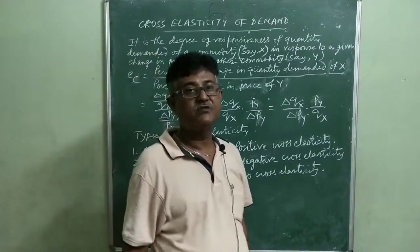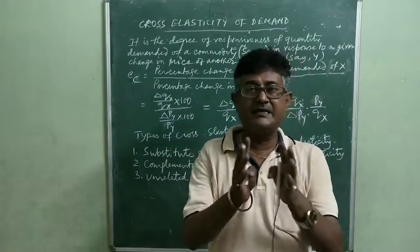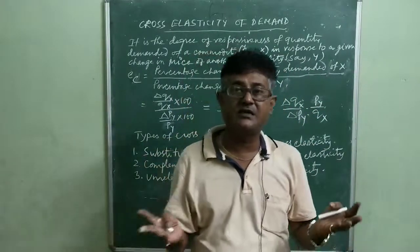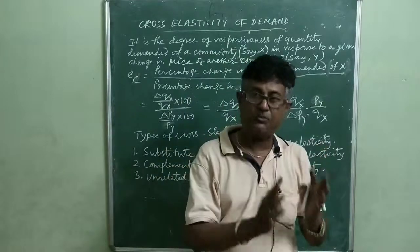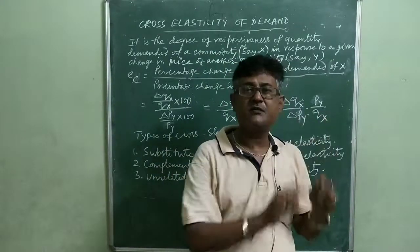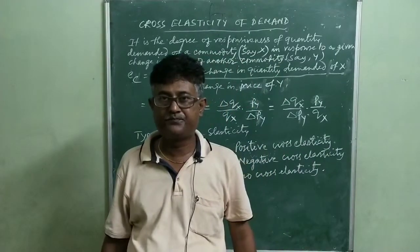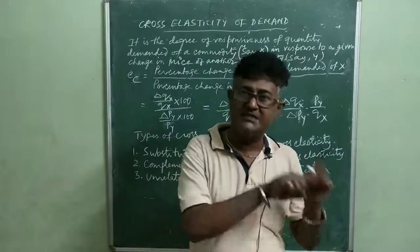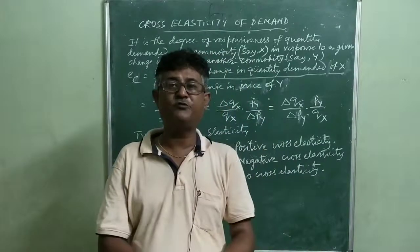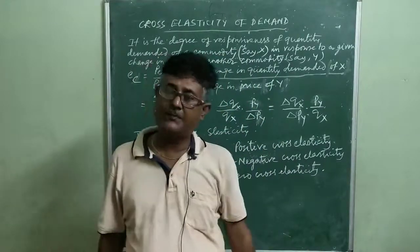In case of unrelated goods — goods between which no relationship exists — such as the price of petrol and demand for umbrella, changes in the price of petrol will in no way affect the demand for umbrella, giving a zero cross elasticity of demand.